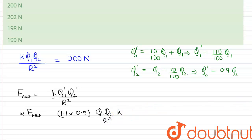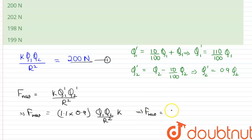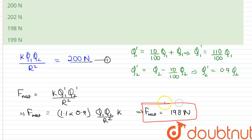It is given to us that the original force is 200 newtons. Therefore, substituting from equation number 1, we can write that F new equals 198 newtons. On this explanation, we can say that the new force is 198 newtons and the answer is option C.